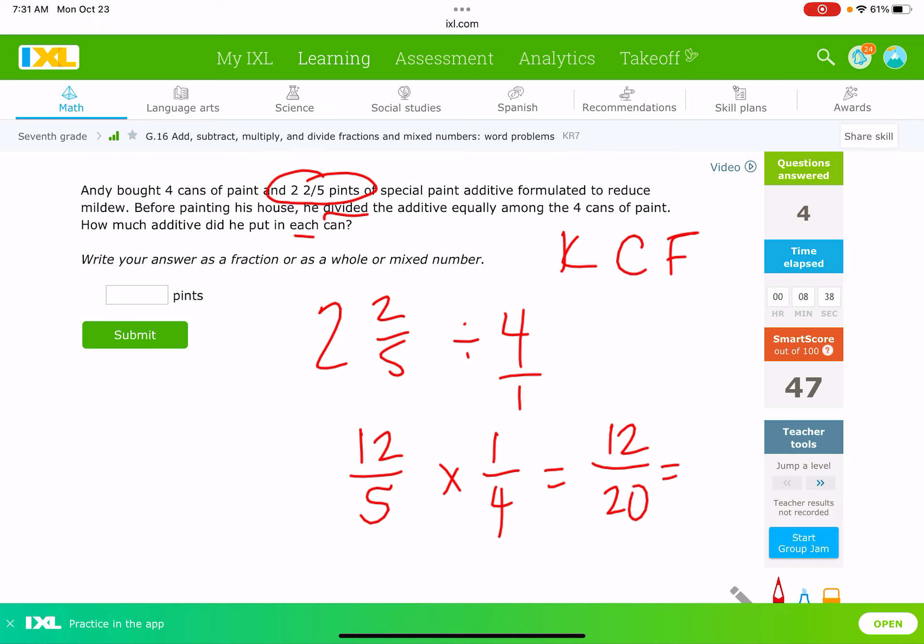But I can simplify this, because 2 goes into both 12 and 20. 2 goes into 12 six times. 2 goes into 20 ten times. And that tells me, I can simplify this even further. 2 goes into 6 three times. And 2 goes into 10 five times. And so, my answer here would be ⅗. ⅗ is how much additive he put in each of the cans.